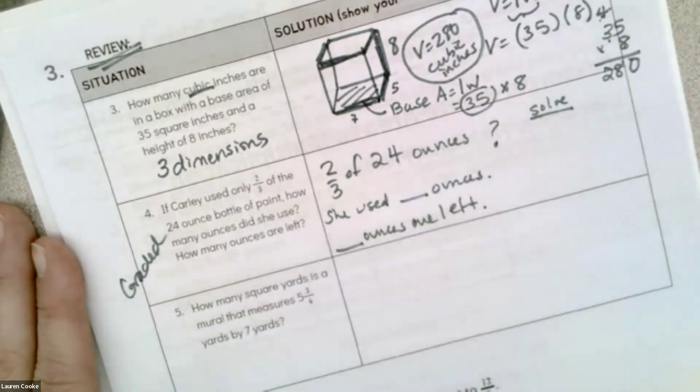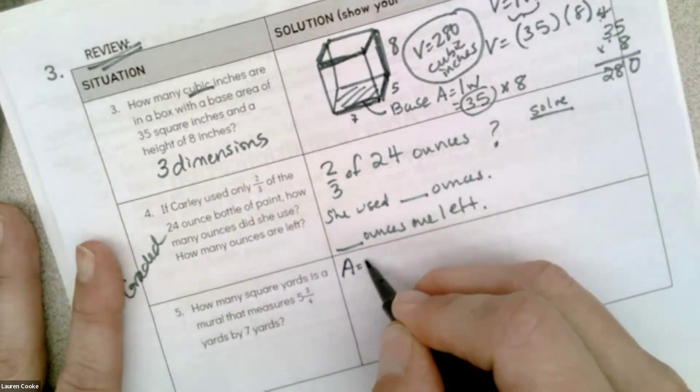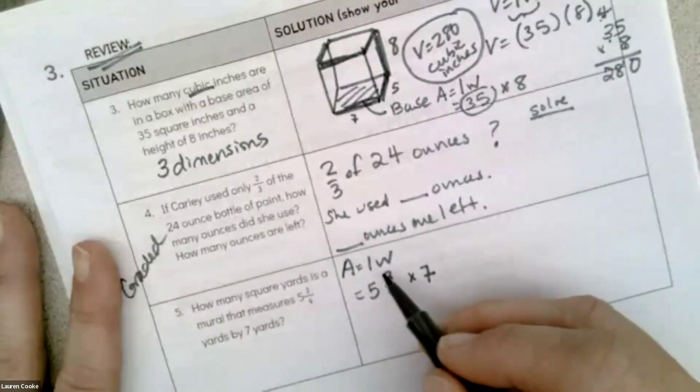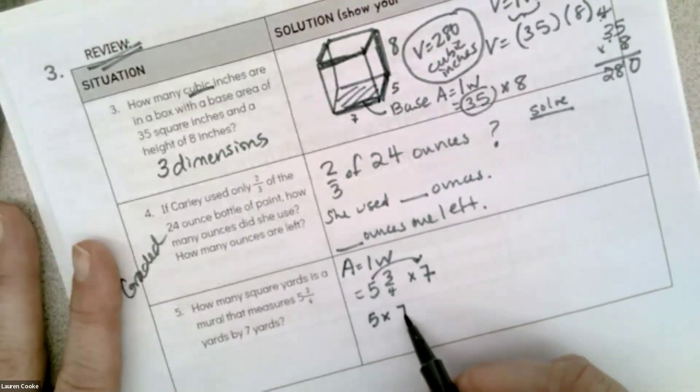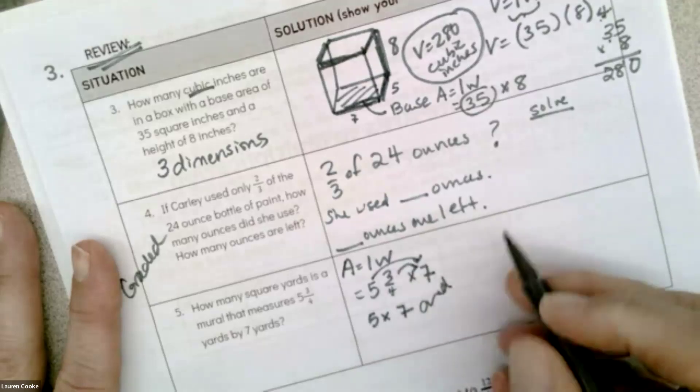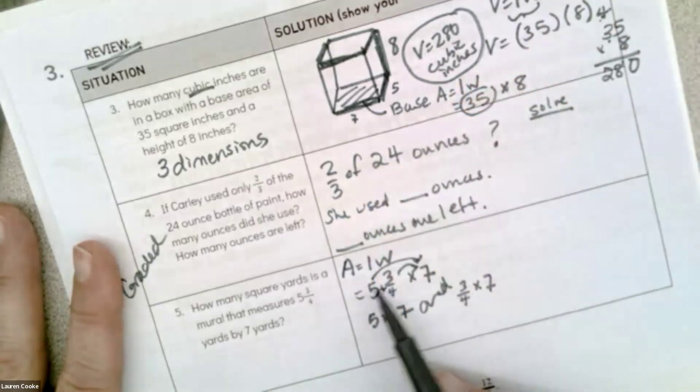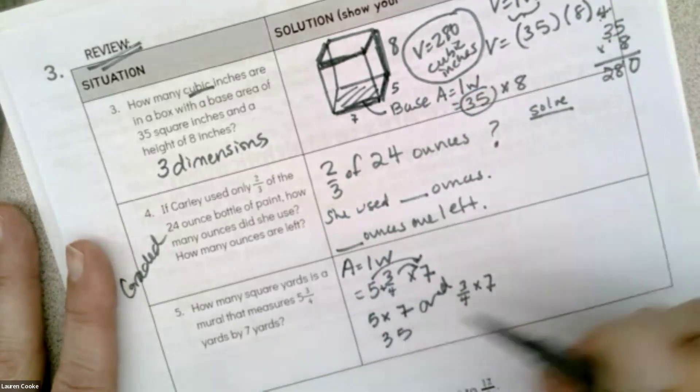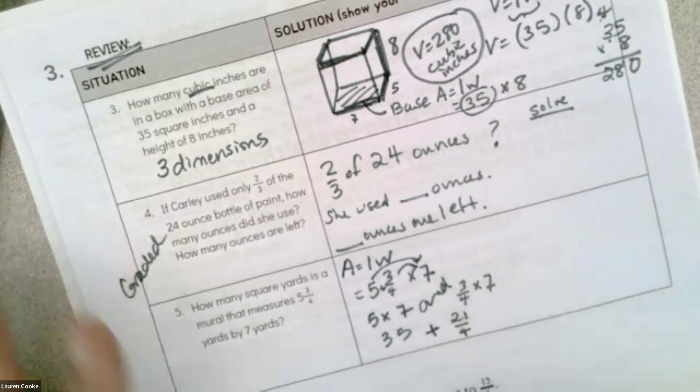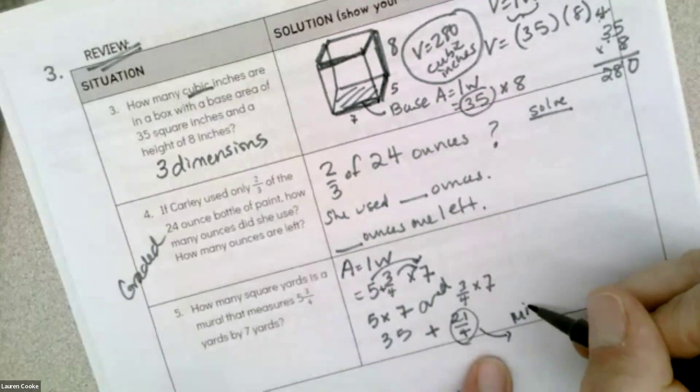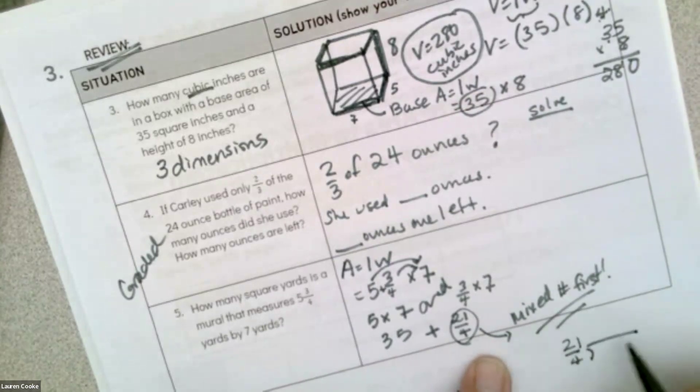Number five: how many square yards is a mural that measures? Square yards means I need area. I have 5 and 3/4 times 7, and I like that it's in this order because I can easily see that I need 5 sets of 7 and 3/4 sets of 7. It's 5 and 3/4, so 5 times 7, 3/4 times 7. I'm going to get 35, and I'm going to get 21 over 4. This has to be turned into a mixed number first; this is one of our mistakes.